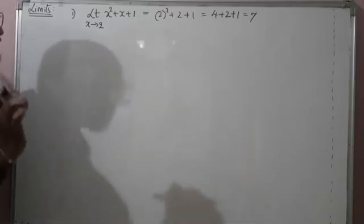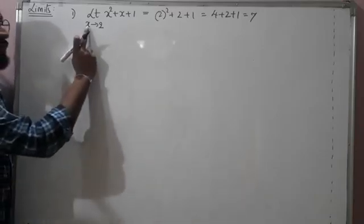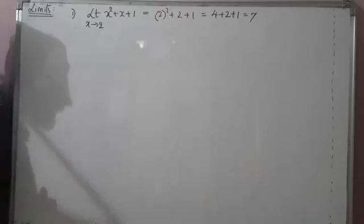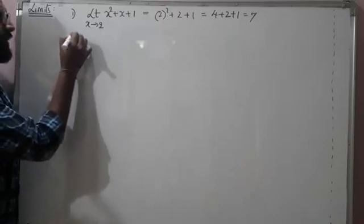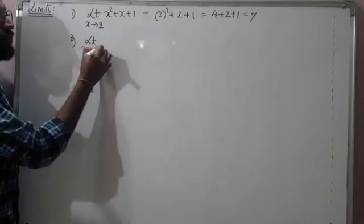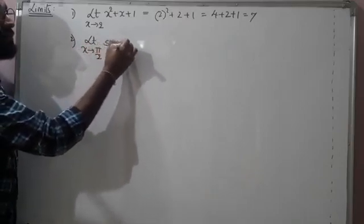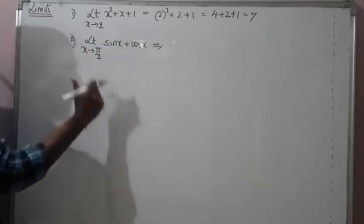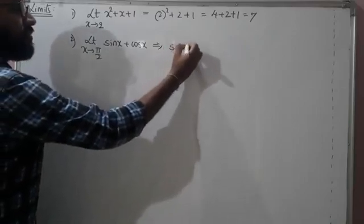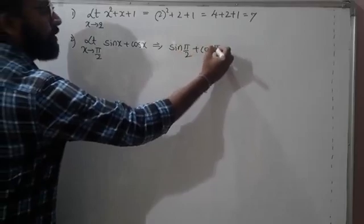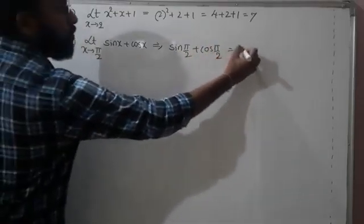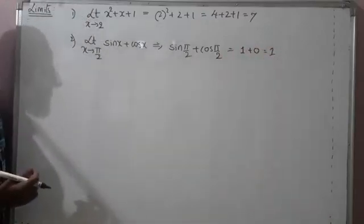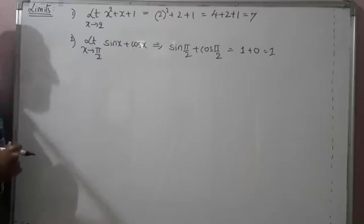The easy way to calculate limits is to substitute the approaching value directly. For example: limit as x → π/2 of (sin x + cos x). Replacing x with π/2: sin(π/2) + cos(π/2) = 1 + 0 = 1. For simple functions, direct substitution gives the answer easily.